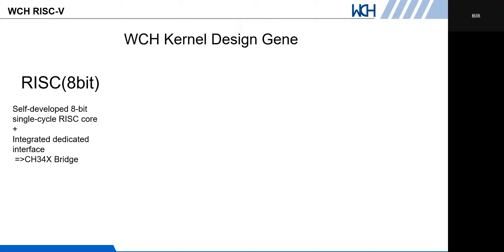Now I'm going to talk about the WCH kernel design gene. In the early years, due to product application requirements, we developed an 8-bit single-cycle RISC core and integrated dedicated peripheral modules such as USB and UART ports, and designed USB to UART and PD fast-charging protocol wireless charger products such as the CH340 and CH37 series chips. The above-mentioned product history has gone through more than 10 years of market inspection and customer adoption, and our product shipments are still relatively high.